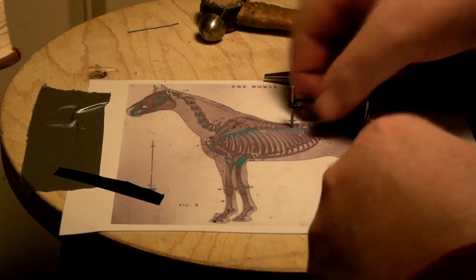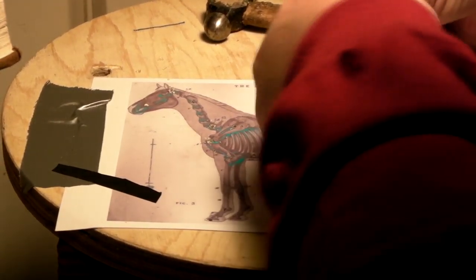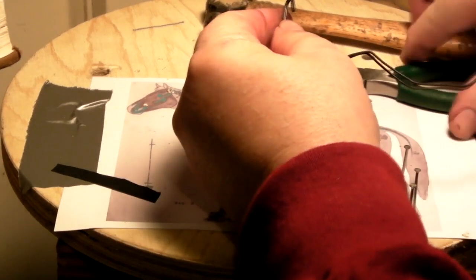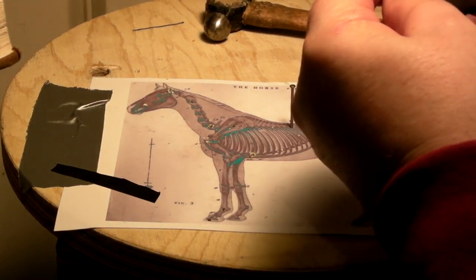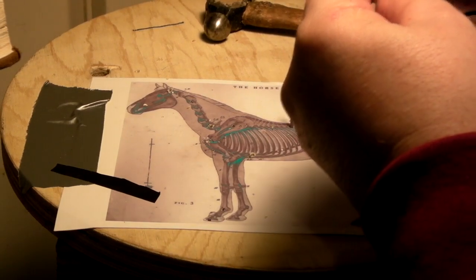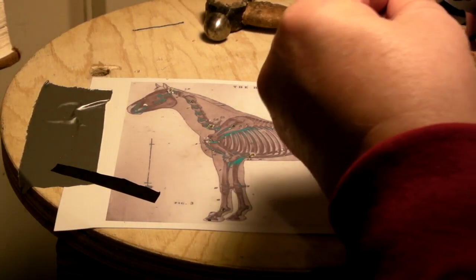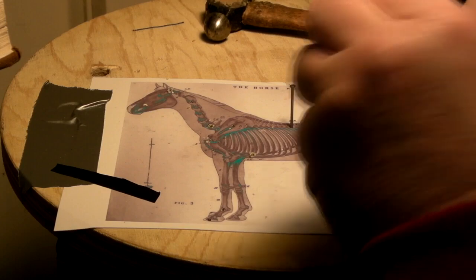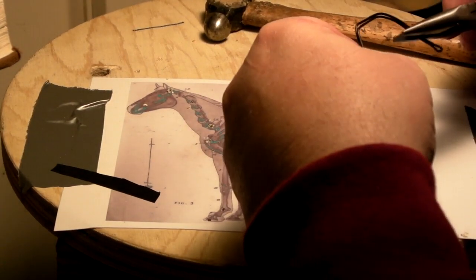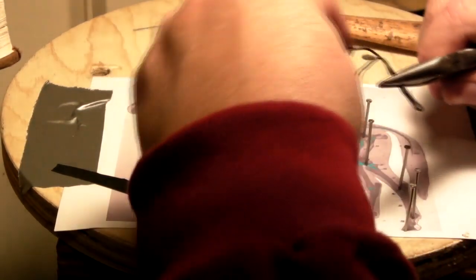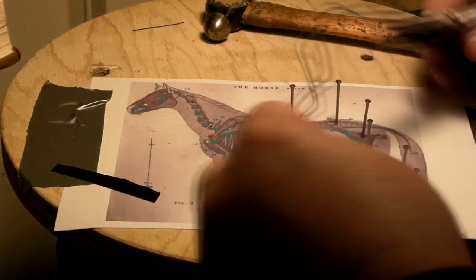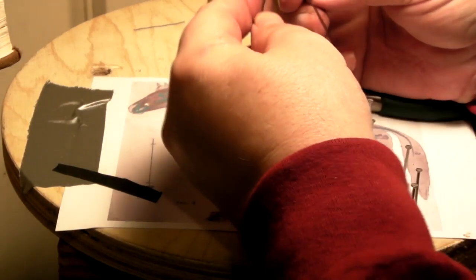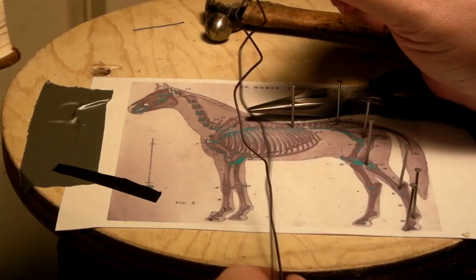And I just straighten this part out because that's going to have to go against the backbone. And now I just spread the hind legs like that, and I have an armature for the hind legs. And how cool is that? Easy as pie.